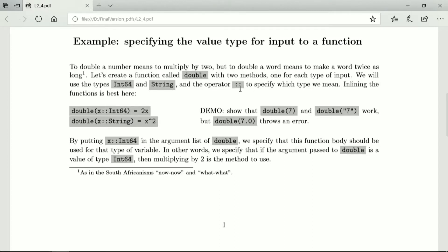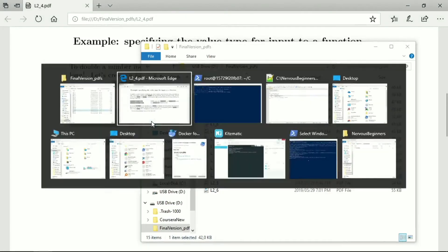The operator double colon specifies type. So here we have double, and the input variable is x, and then we specify that if x is of type int64, then we multiply it by two. And here if x is of type string, then we repeat it two times. Okay, so let's look at that.